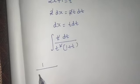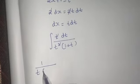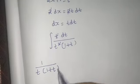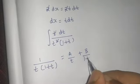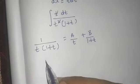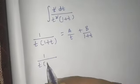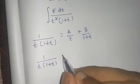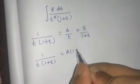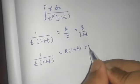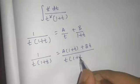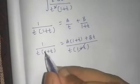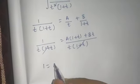If we use partial fractions, 1/[t(1+t)] can be written as A/t plus B/(1+t). If we simplify, this becomes [A(1+t) + Bt]/[t(1+t)]. The denominator cancels, so 1 equals A(1+t) plus Bt.